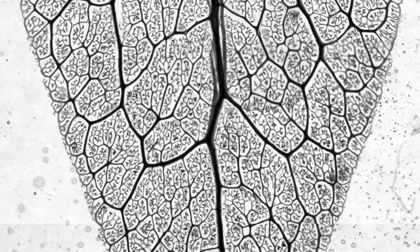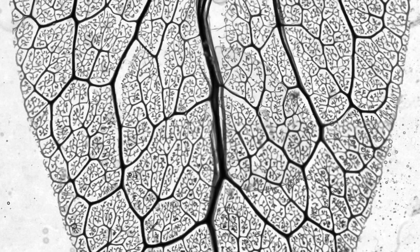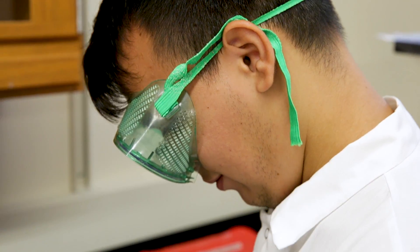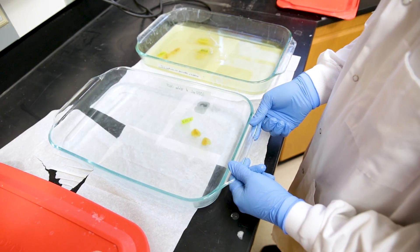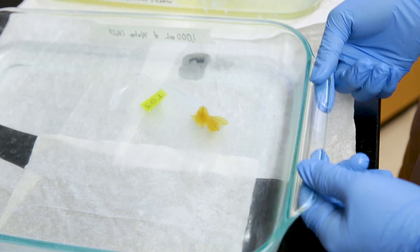If you hold a leaf up to the light, what you'll notice is that there's a very beautiful network of connections underneath the surface. These are veins inside of the leaf and these are structures which transport resources throughout the plant.